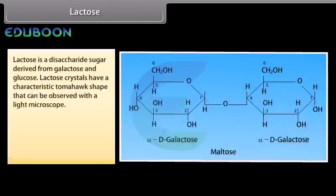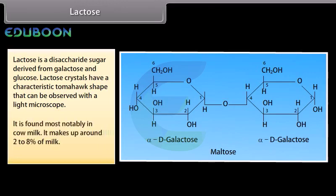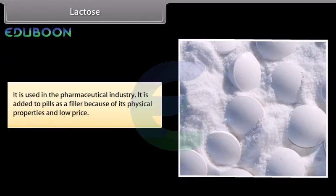Lactose is a disaccharide sugar derived from galactose and glucose. Lactose crystals have a characteristic tomahawk shape that can be observed with a light microscope. It is found most notably in cow milk, making up around 2-8% of milk. It is used in the pharmaceutical industry, added to pills as a filler because of its physical properties and low price.